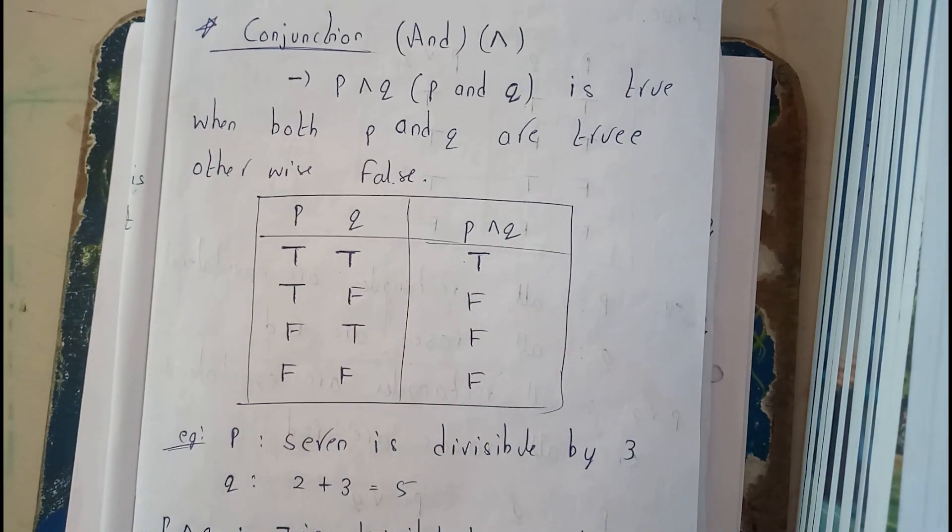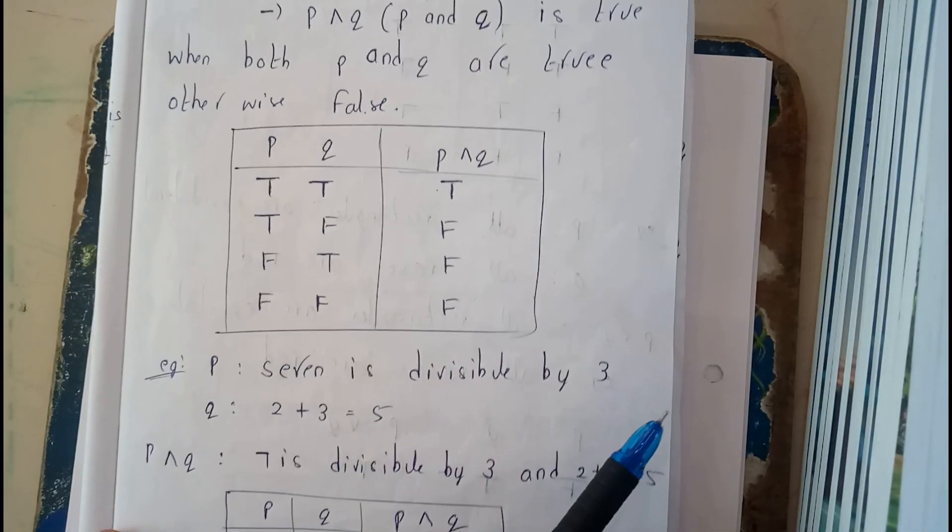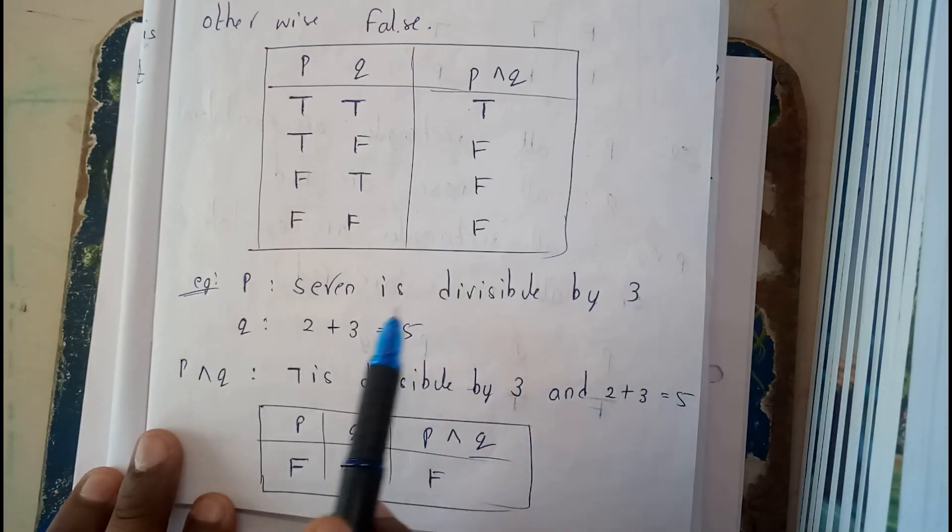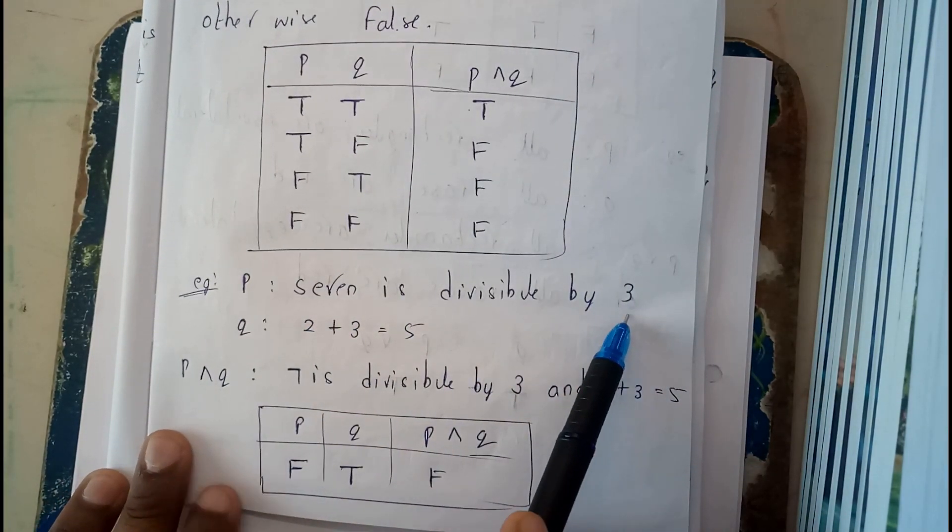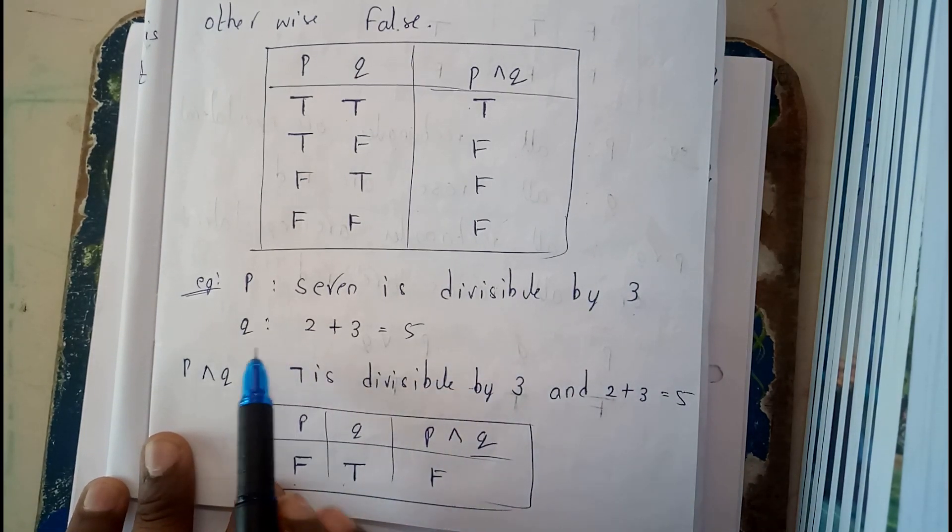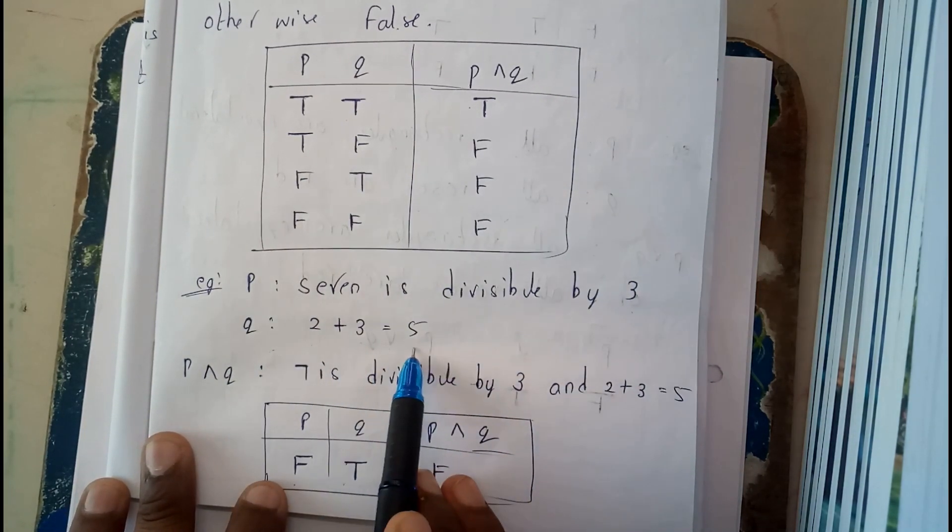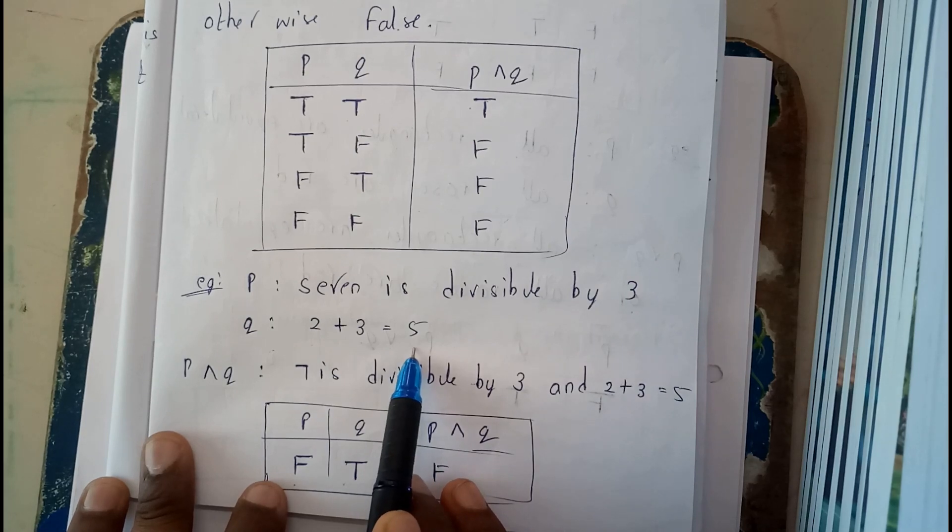Let's go through a small example. P: seven is divisible by three - is it true? No, it is false. Q: two plus three equals five - is that true? Yes, two plus three is five.